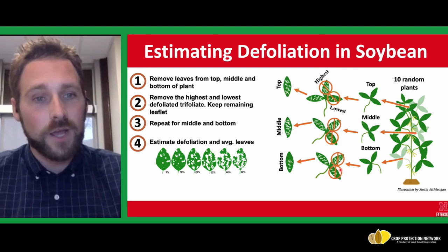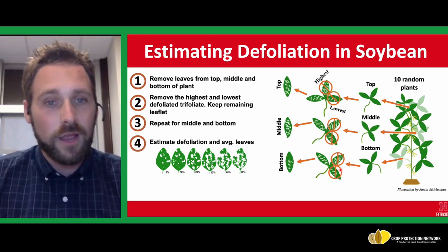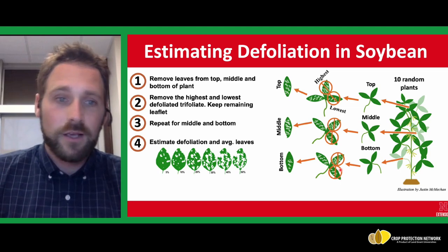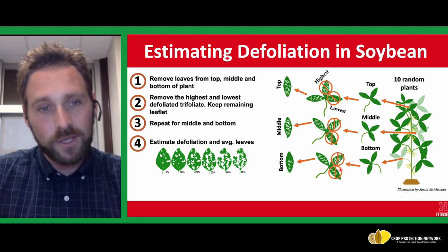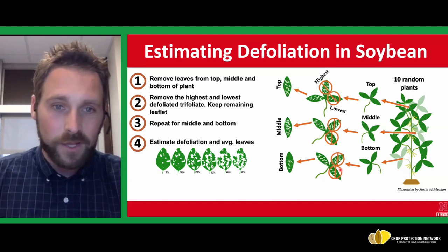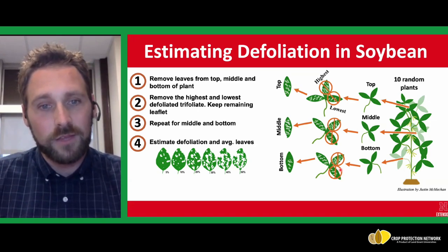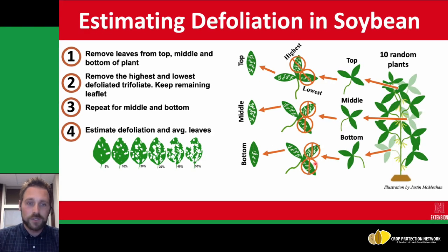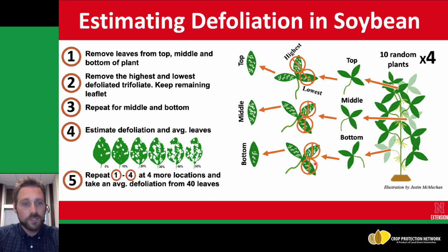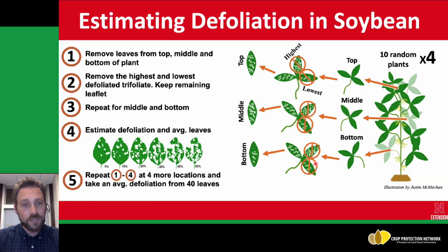The most difficult part is estimating the defoliation and averaging that across all the leaves you're looking at. That can be pretty difficult — most of you looking at the example leaves would say no way that last plant is 50%, but they've actually used a computer to determine the amount of leaf tissue removal in each one of these images. This requires a bit of training, even for someone who's seen a number of years in a soybean field. This is one of four locations you would want to look at within the field, because some insects are edge feeding insects and not equally distributed, and sometimes we may limit our treatments to the spaces where that injury is occurring.